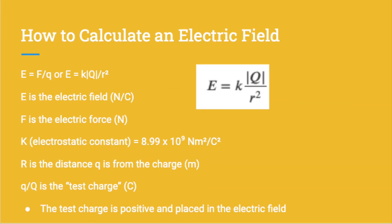Now the question is, how do we calculate an electric field? The equation is given: E equals F over Q, or E equals K times the absolute value of Q over R squared.